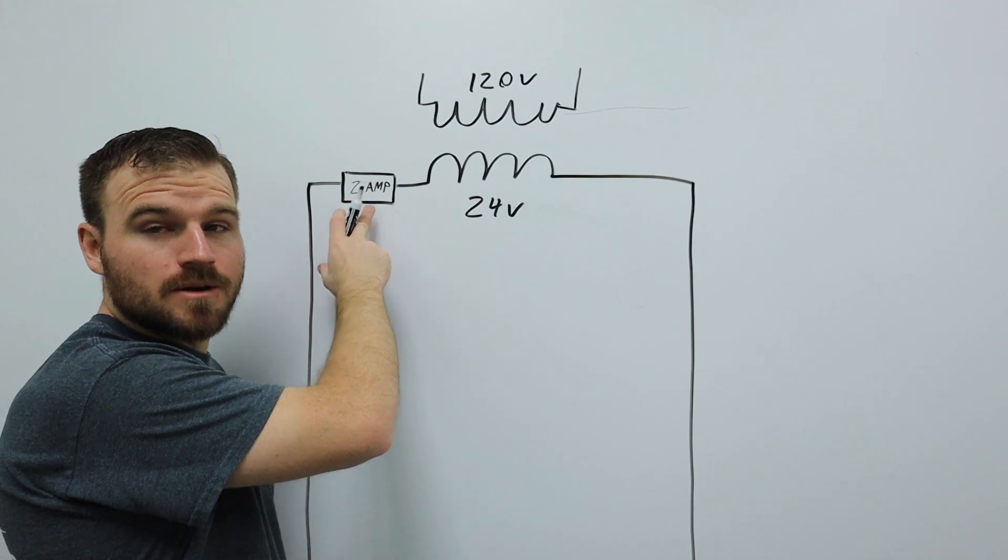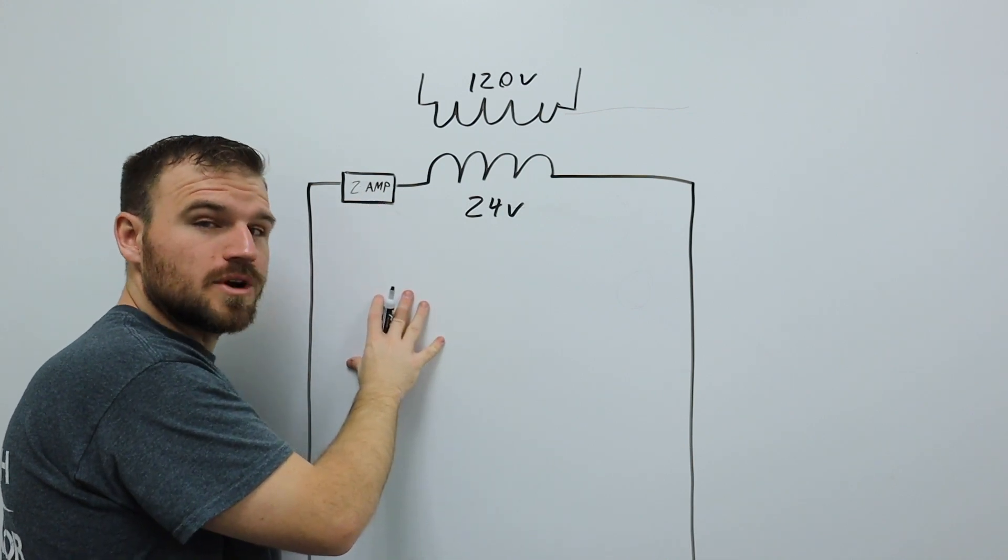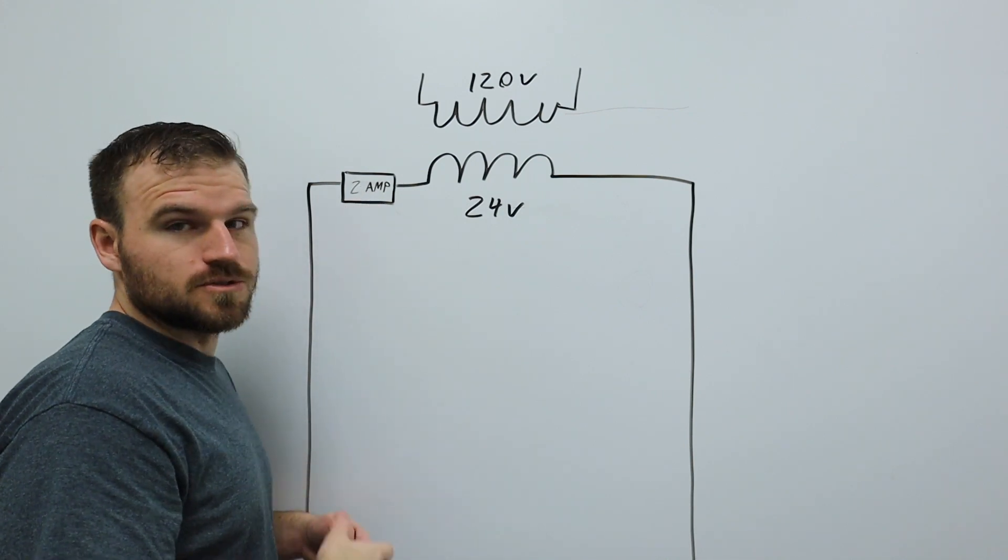We're using a two-amp breaker because most of our circuits we're using are going to be pretty low voltage or low draw.